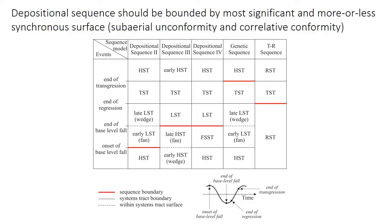The transgressive-regressive sequence model on the right-hand side even just uses two systems tracks, either regressive or transgressive. In any case, the depositional sequence is cyclical — it falls, then it rises, then it falls again, then it rises again. So you could choose any surface to divide one sequence from the next, and it's actually somewhat of an arbitrary division. As long as you're consistent, it shouldn't really matter. But it is presumably best to choose a surface that is easily recognizable and that's more or less synchronous.